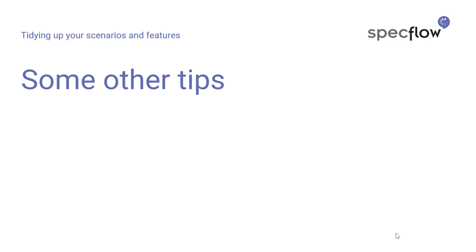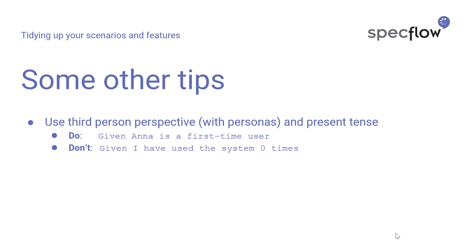But that's not all you can do to keep your feature files clean and easy to read. Another thing I often recommend is using third-person perspective in your steps. Instead of saying 'given I' or 'given the user', name the actor in your scenario. For example, I use the name Anna instead of 'I' or 'the user', because this makes scenarios much more vibrant. I've seen teams using actual names of personas from their design process in their feature files as well, so everybody can relate to the actor.